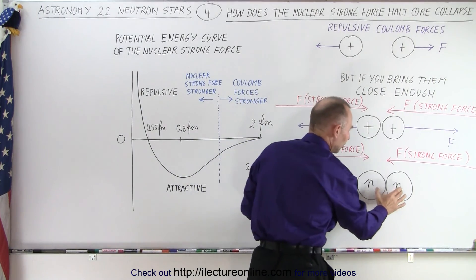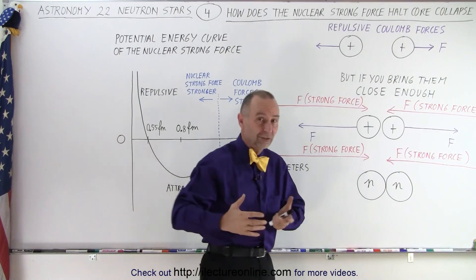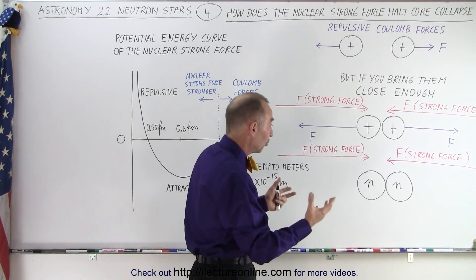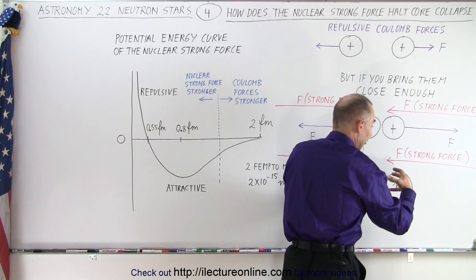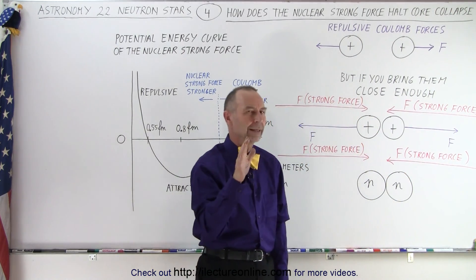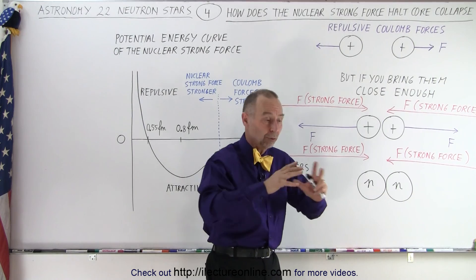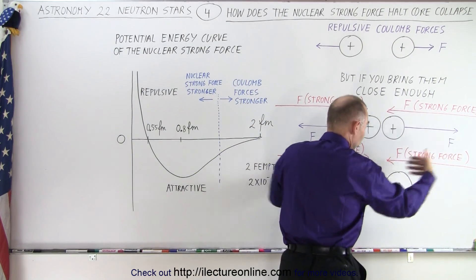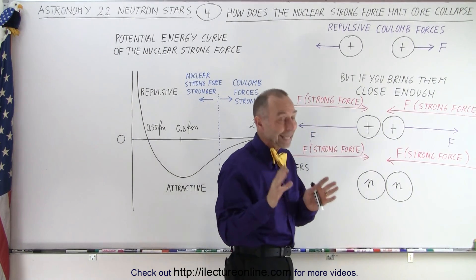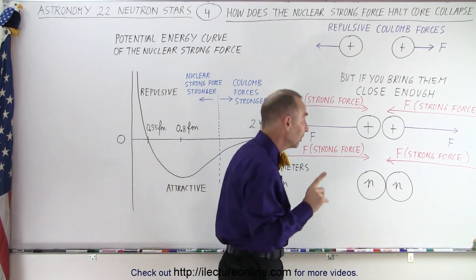If we're dealing with two neutrons, we don't have any repulsive forces because they don't have any charges. And so, therefore, the nuclear strong force becomes very powerful when they get very close. Then you say, well, wait a minute. Didn't you just tell me that the nuclear strong force is responsible for stopping the collapse? But doesn't the nuclear strong force pull them closer together? Well, yes, up to a certain point.